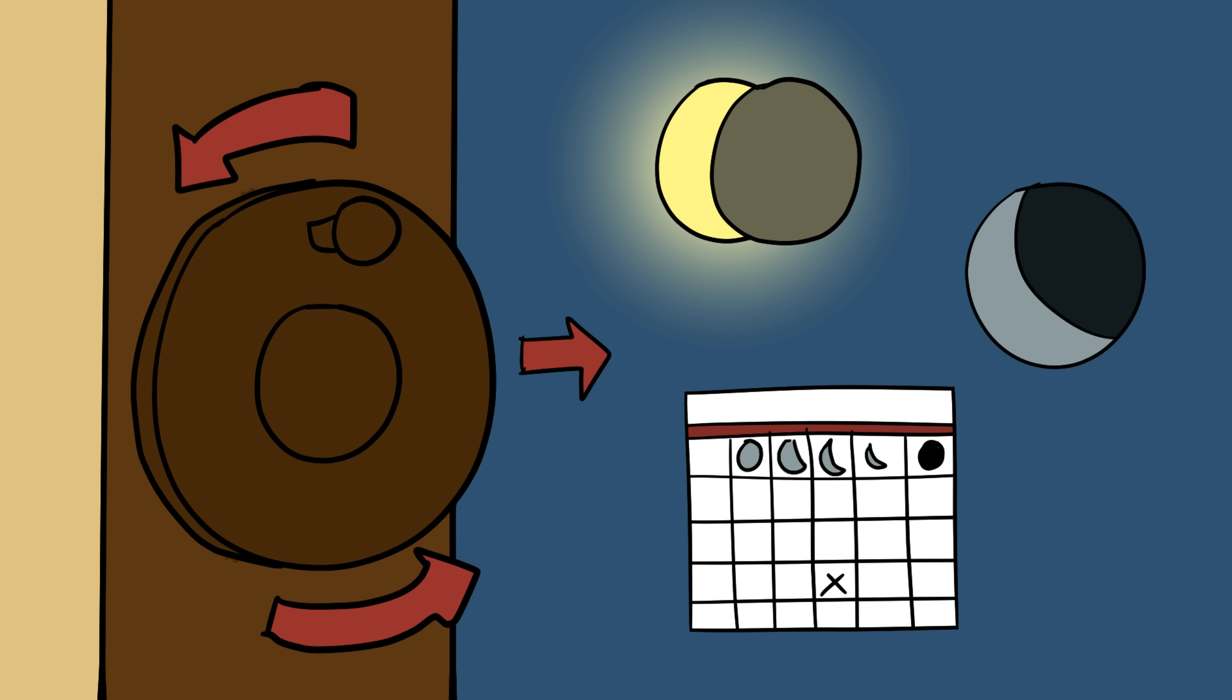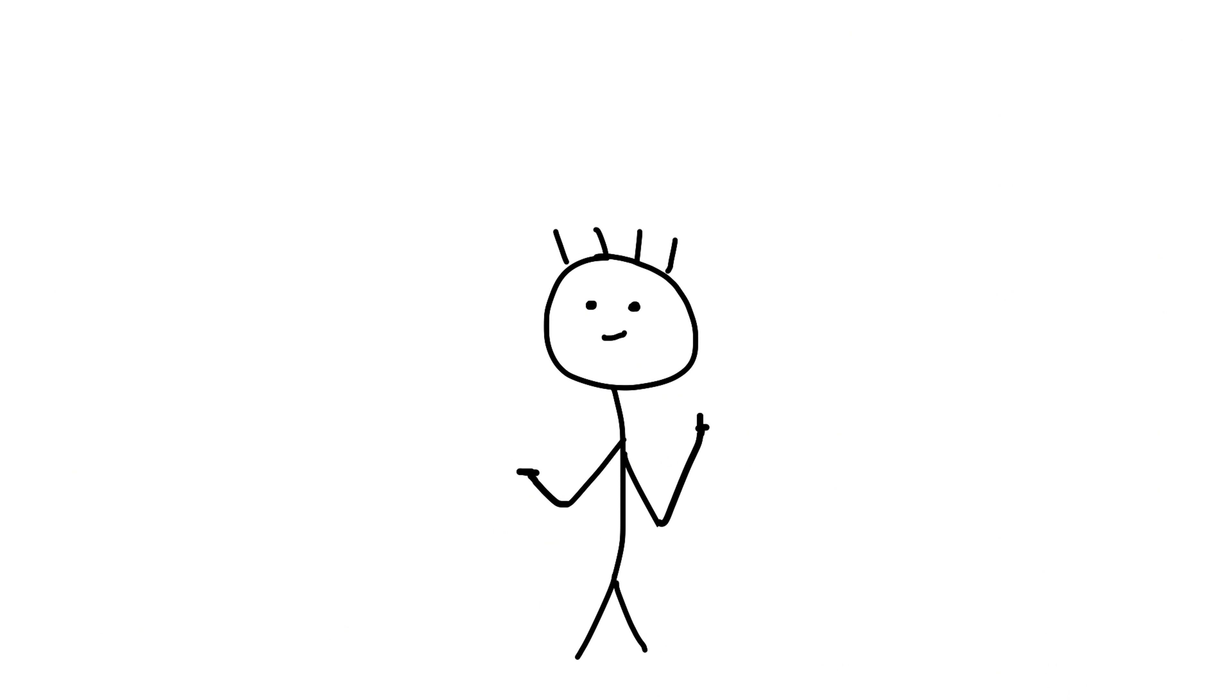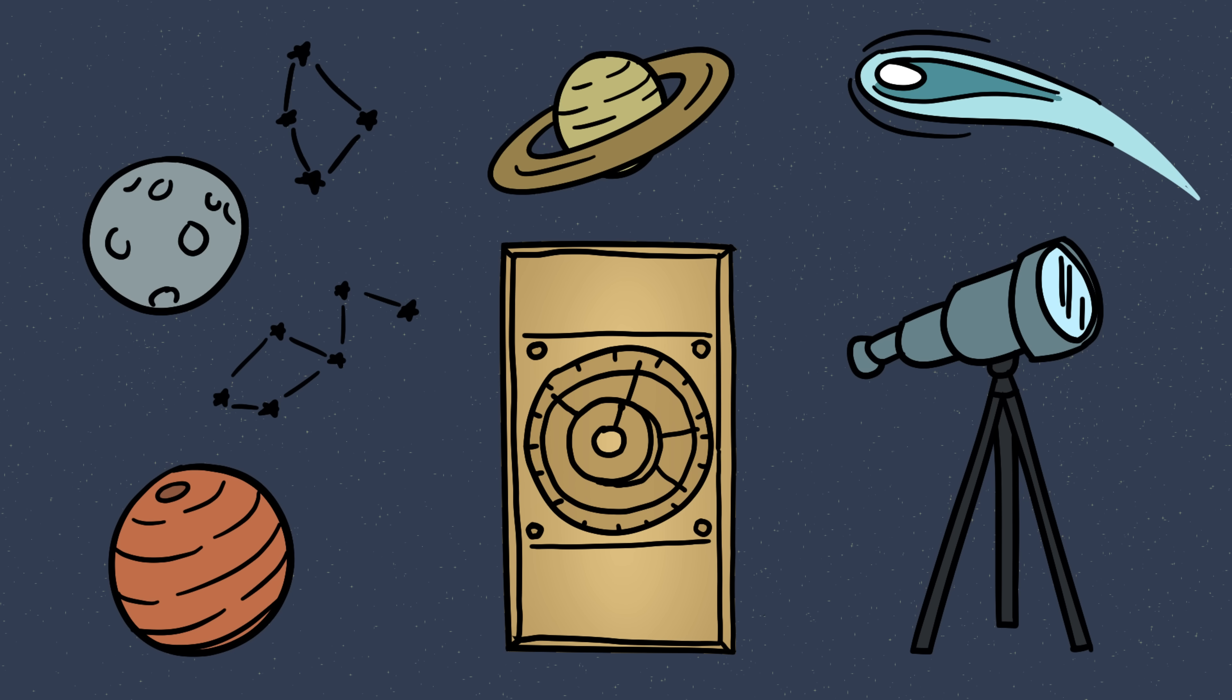By turning a crank, the user could predict eclipses, track lunar cycles, and even mark the dates of the ancient Olympic Games. It was built more than 2000 years ago, yet its complexity wasn't matched until medieval clockmakers, over a thousand years later. This wasn't just a calendar, it was a portable planetarium.